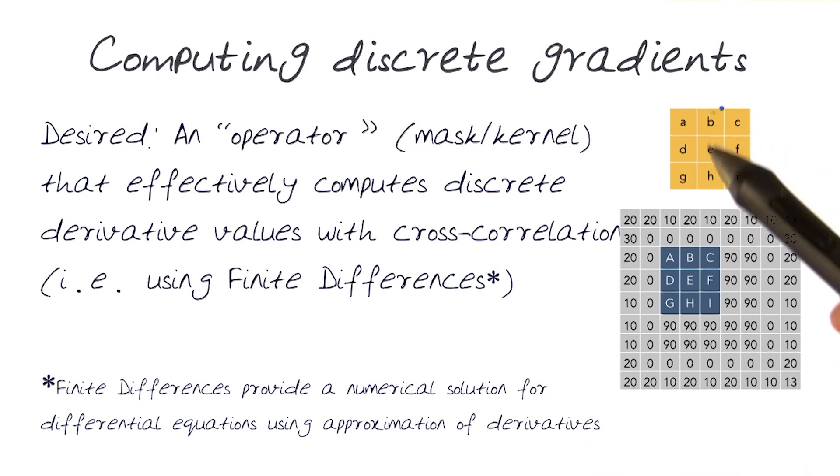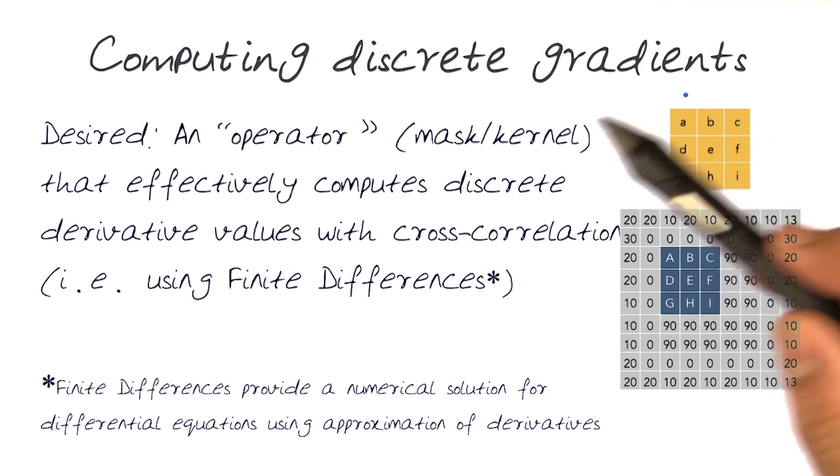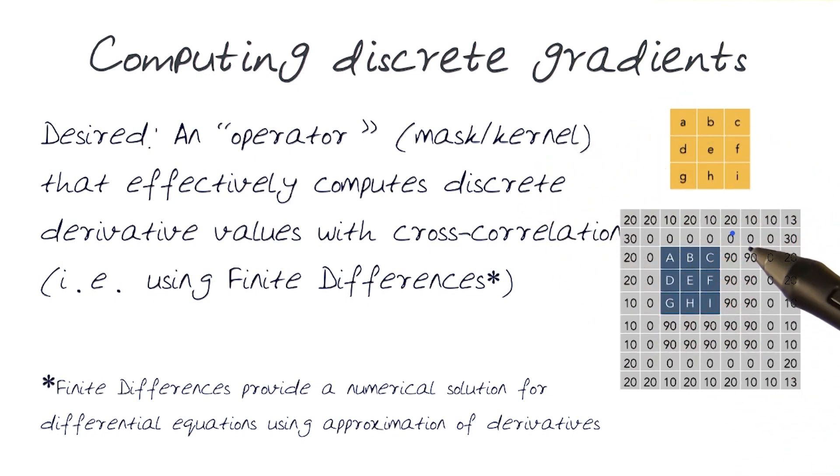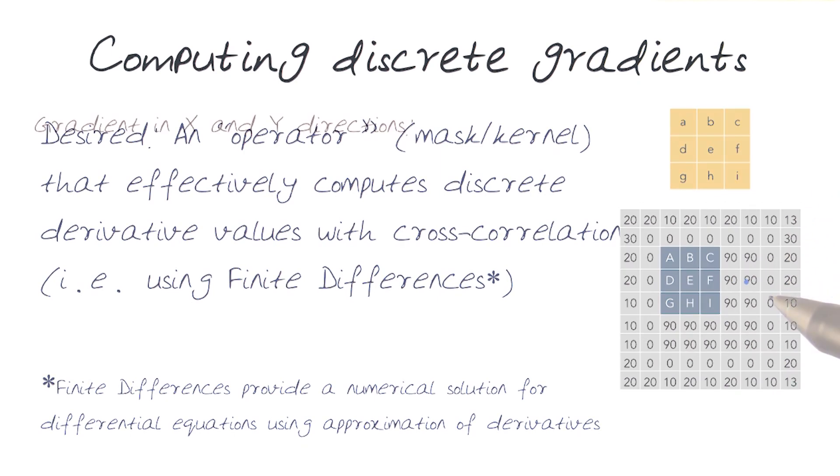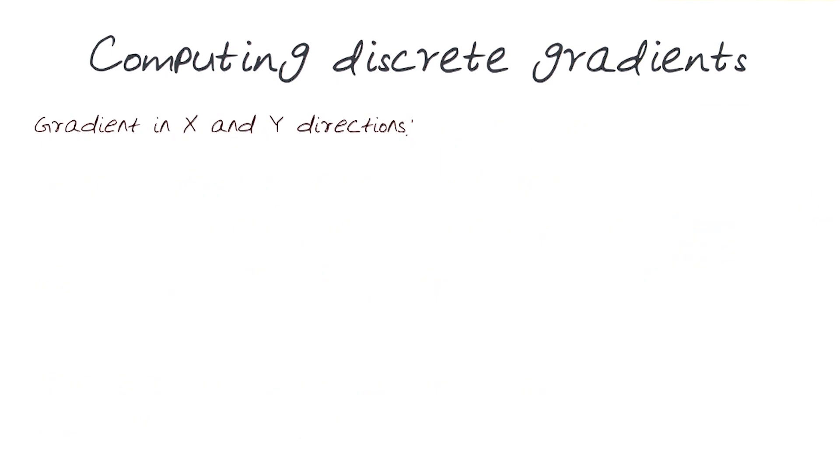What we're interested in, and we did this previously, is coming up with a simple kernel that when applied to an original image in a cross-correlation framework, could be used to generate a derivative. How do we do this for discrete images?